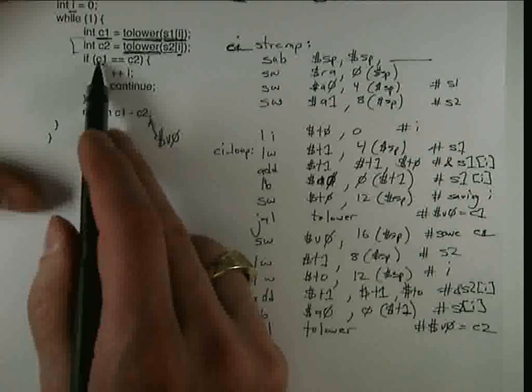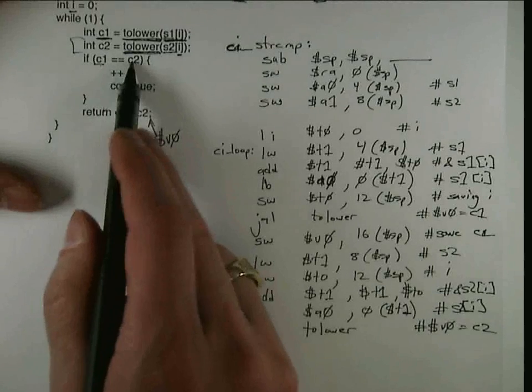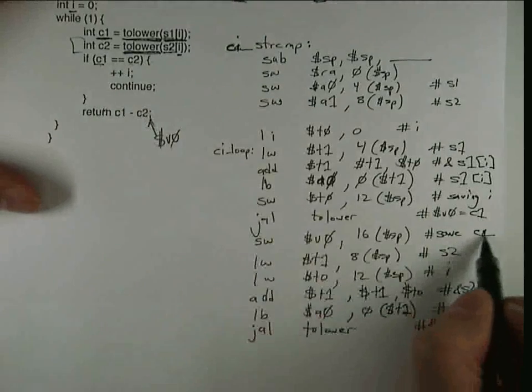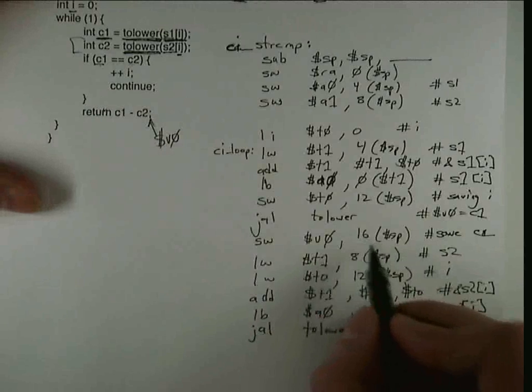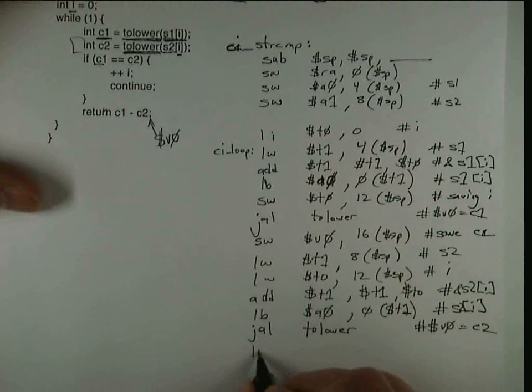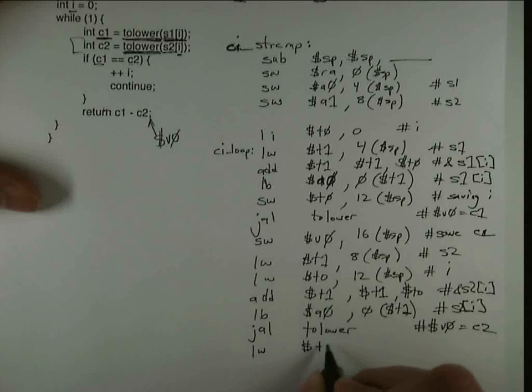And so I want to do a branch if not equal C1 and C2. But currently C1 is on the stack. And so before I can work with C1, I have to first load it off the stack.